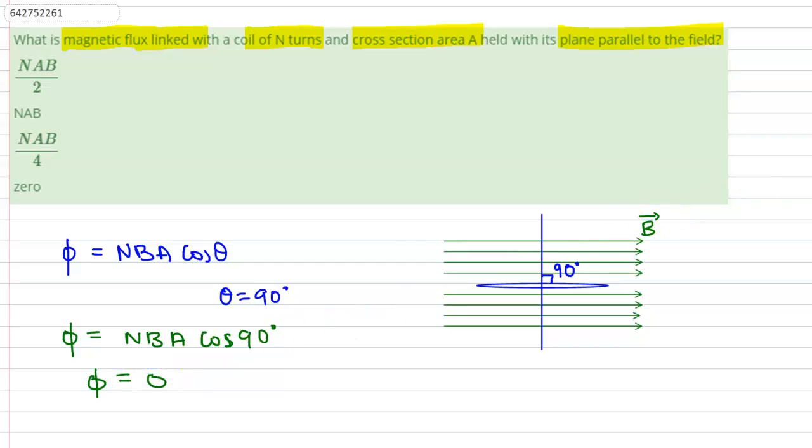Hence, on calculation, we can say that the linked magnetic flux of the coil which is held with its plane parallel to the field is equal to 0. The answer is option number 4. Thank you.